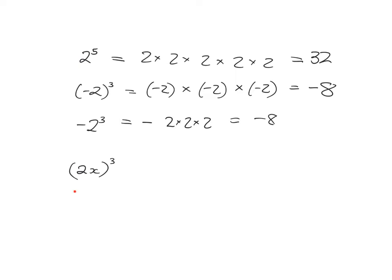And then in this case, we've got the whole 2x that's under the influence of the 3. So it's the whole 2x that has to be multiplied together 3 times. And I'm going to write that 2x multiplied by 2x multiplied by 2x. And what will that be equal to? Well, 2x just means 2 times x. So what we've got is 2 times x times 2 times x times 2 times x. 2 times 2 times 2 is 8, and x times x times x is just x cubed.